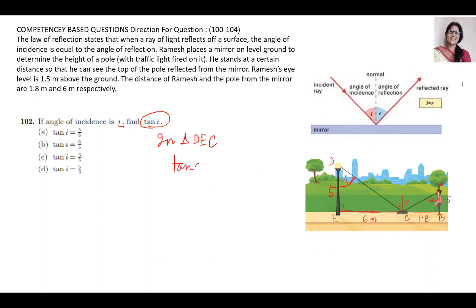Tan I is equal to perpendicular by base or opposite by adjacent. Opposite EC by DE, because I angle is at D and adjacent is DE. So EC is 6 and DE is 5. So tan I is equal to 6 by 5. B is the answer.